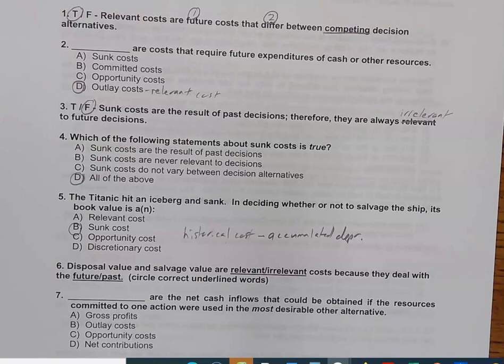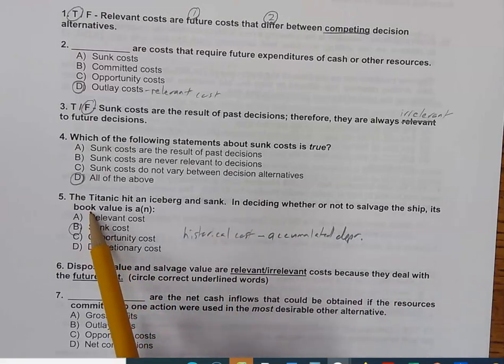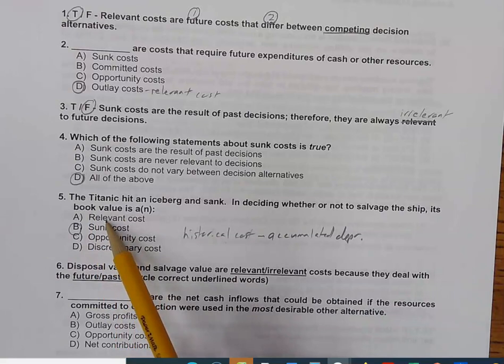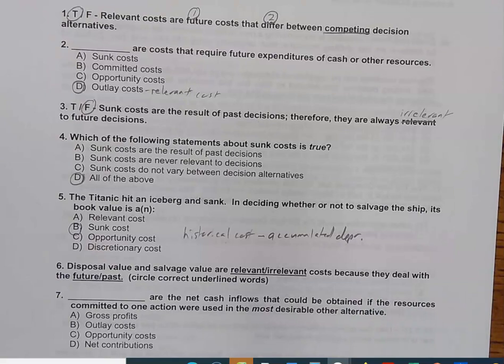Now, if we had said, if we had changed this right here, in deciding whether or not to salvage the ship, its market value, if we had changed the word book to market, then the answer would have been A. But that's not the case here. So, let's look at a couple more.